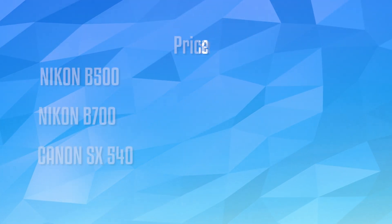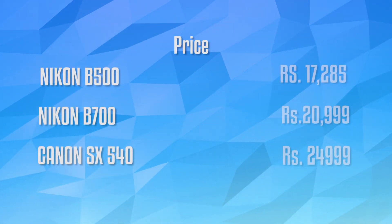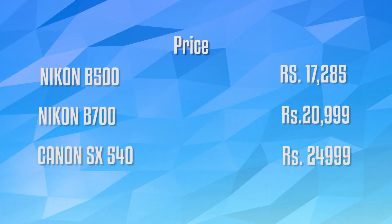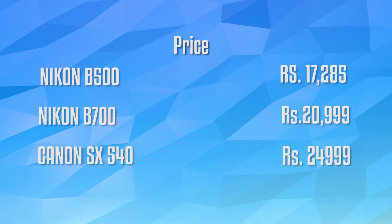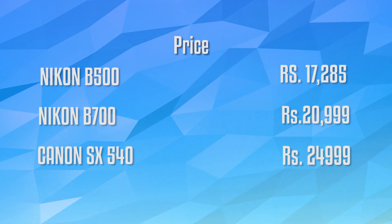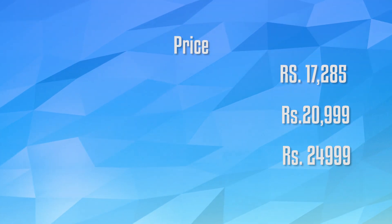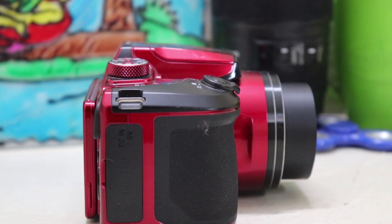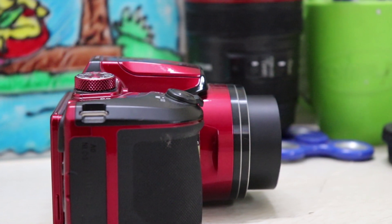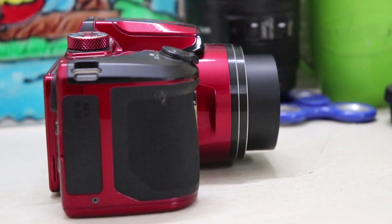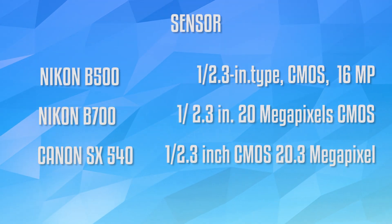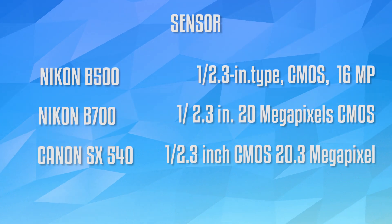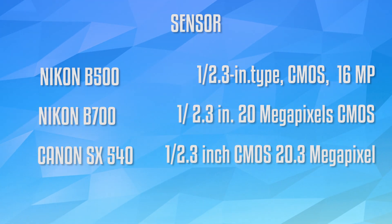The Nikon B500 costs around 17,000 rupees in India. The Nikon B700 costs around 20,000 rupees in India, and the Canon SX 540 costs around 25,000 rupees. The B500 has a CMOS 16 megapixel sensor, the Nikon B700 has a 20 megapixel CMOS sensor, and the Canon SX 540 also has a CMOS 20 megapixel sensor.